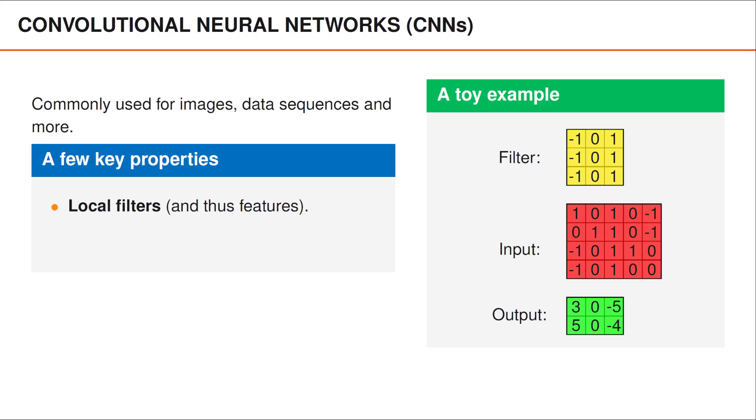Two properties are particularly interesting when comparing CNNs with transformers. First, that the filters are applied locally and therefore only identify local features.